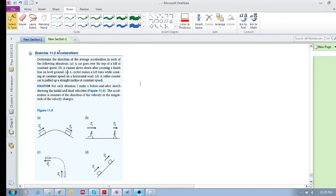Let's look at this example, Exercise 11.2 Accelerations. It says determine the direction of the average acceleration in each of the following situations. So a car goes over the top of a hill at constant speed, so how do we determine it?